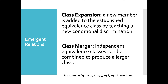The chapter also discusses expanding stimulus classes — when you add a new member to an established equivalence class by teaching new conditional discriminations, expanding beyond the classes you originally taught relationships among. You can also merge classes, combining independent equivalence classes to produce larger ones. For examples of class expansion and class merging, review textbook figures 19.6 through 19.9.